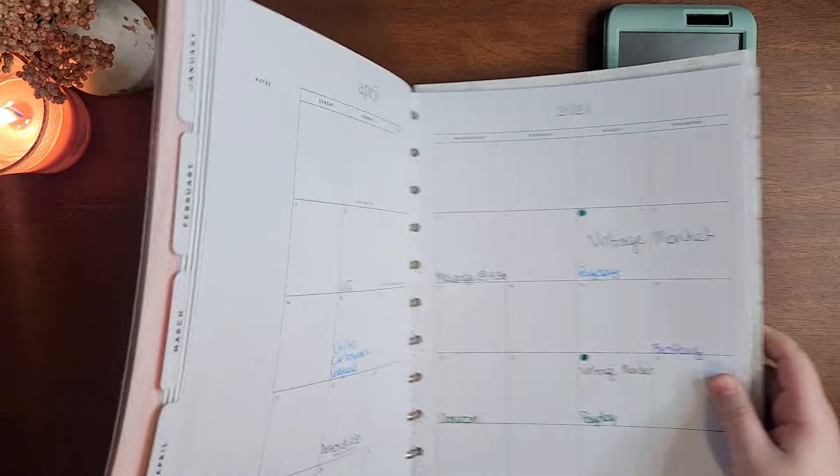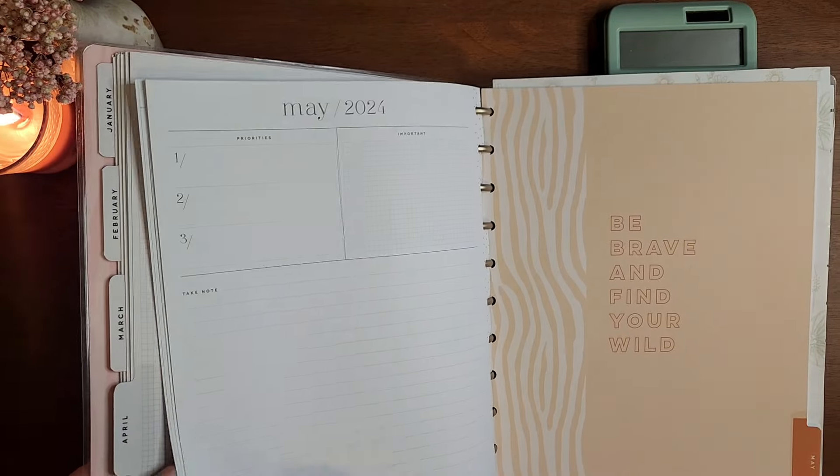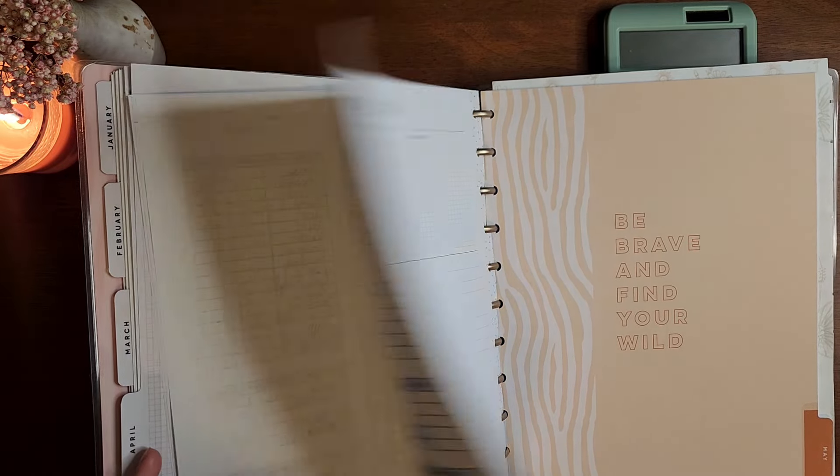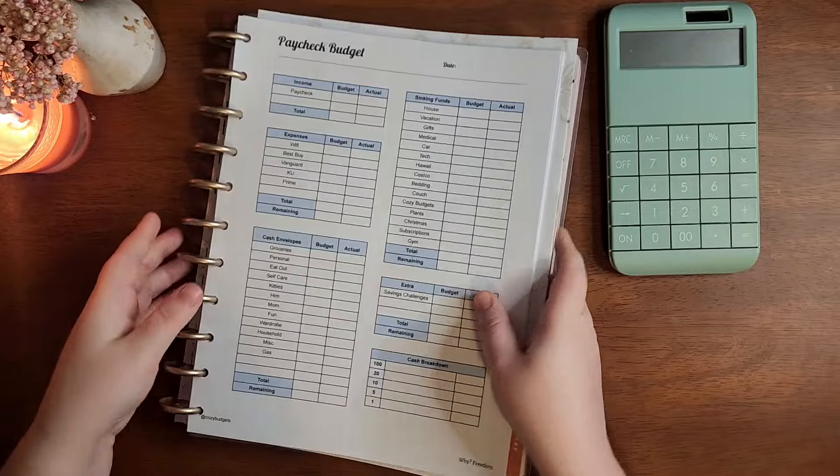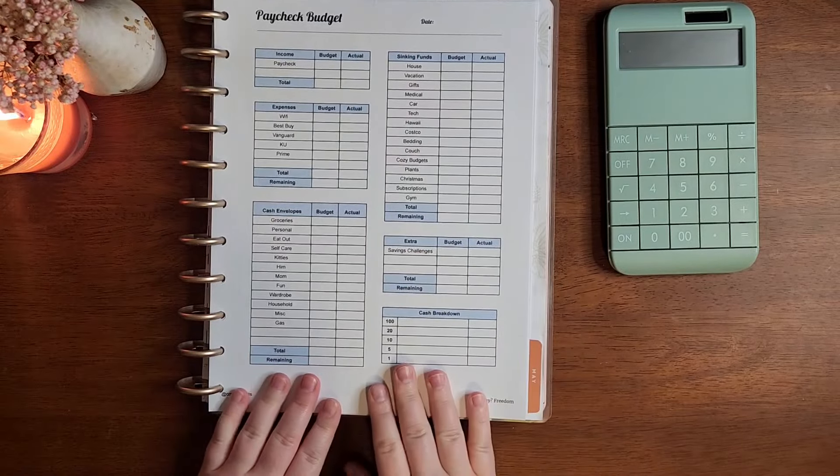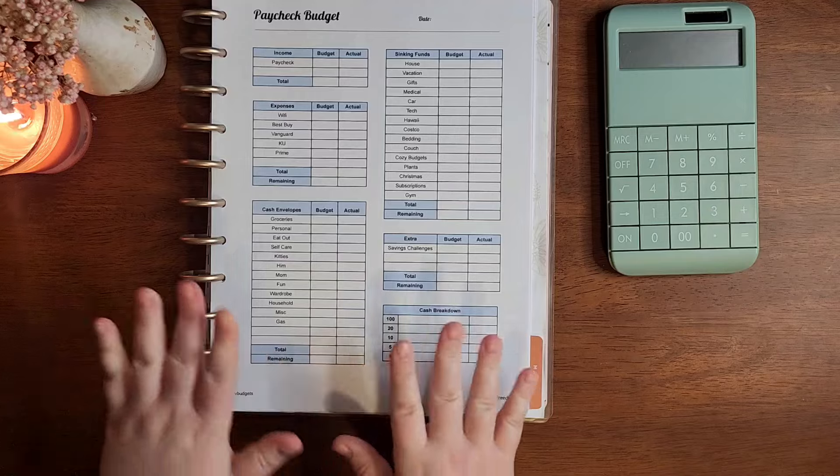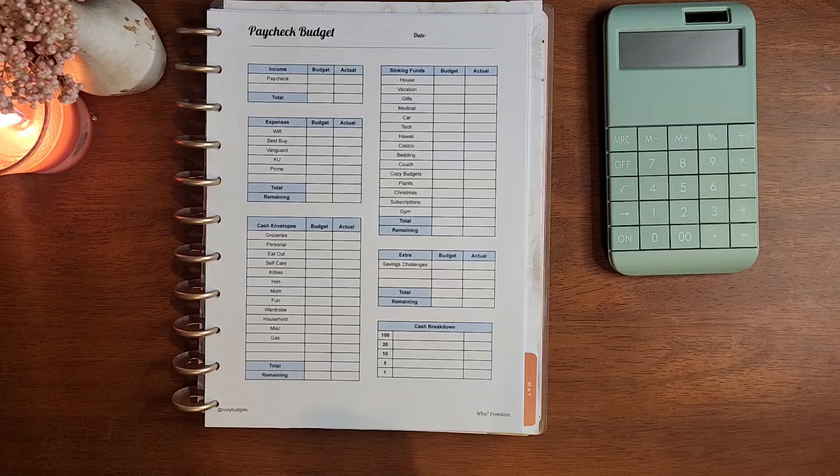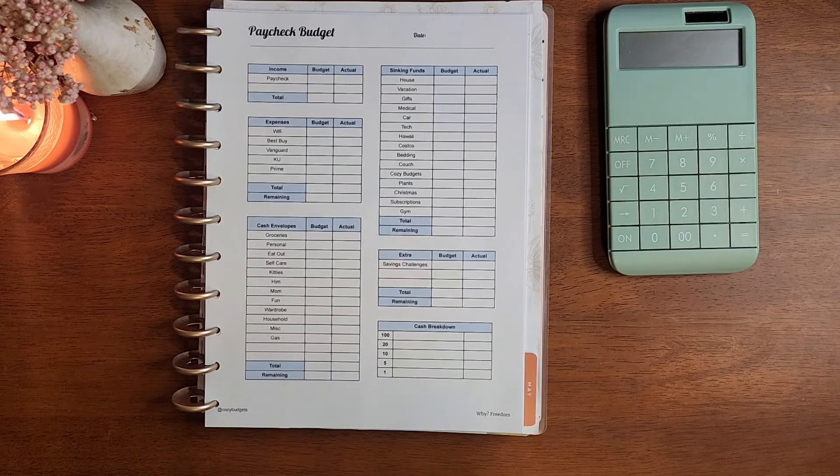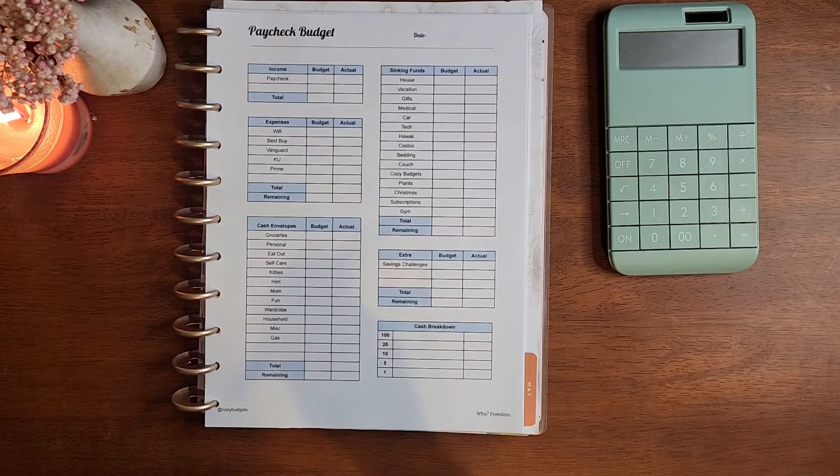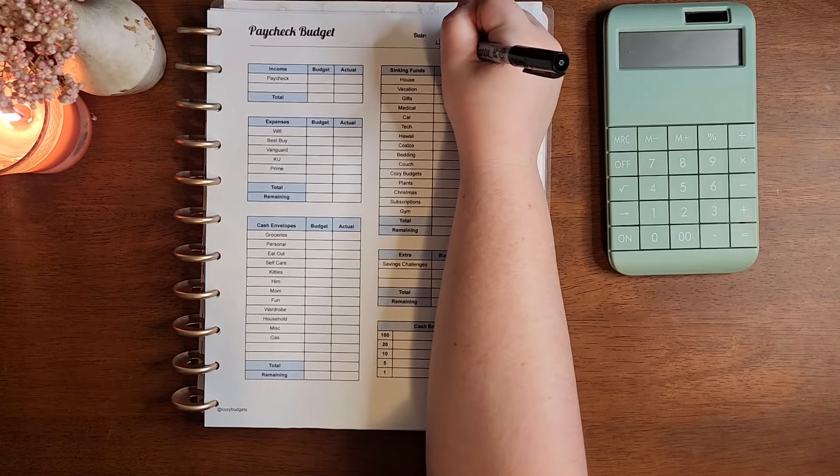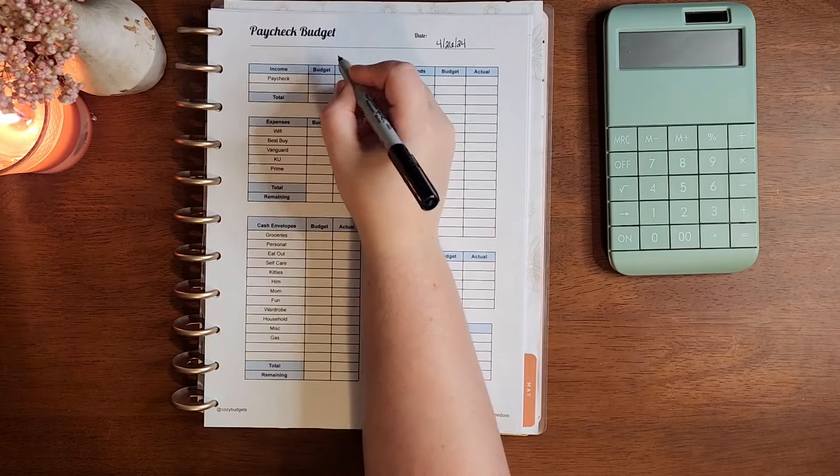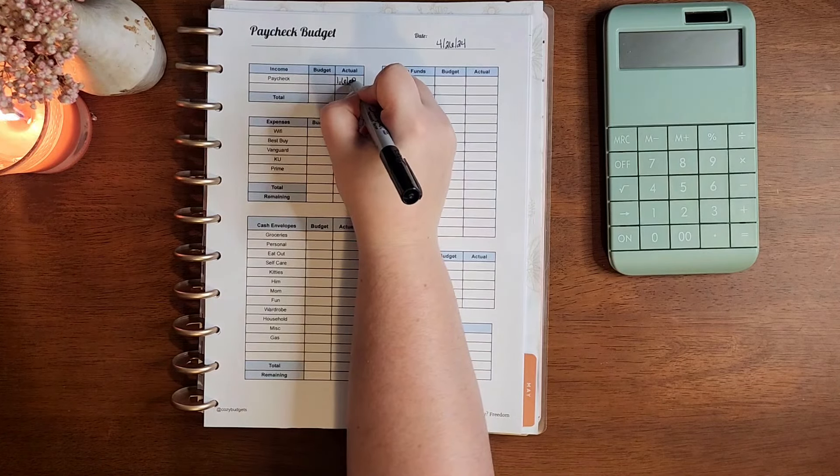Okay, so we are working on the April 26th paycheck. Let me get this sorted. And I did finally update my budget to have it written out or typed out. I'm not 100% sure if I like it, but we are going to give it a shot and see. Okay, and 4-26-24 is the date. And my paycheck is $1669.